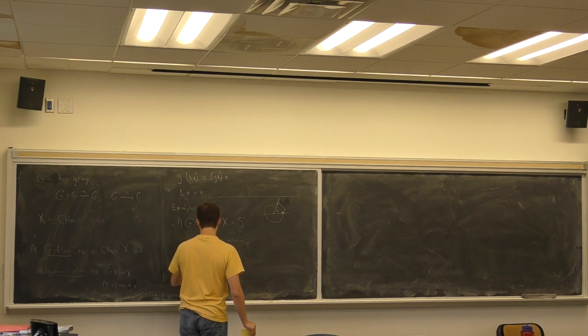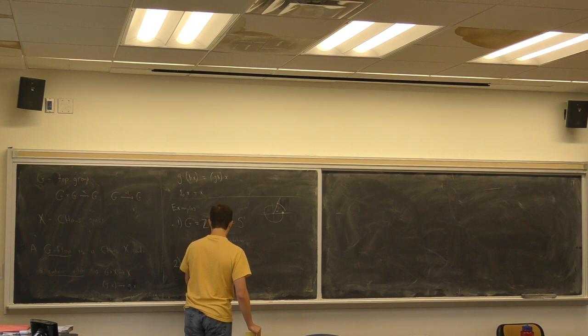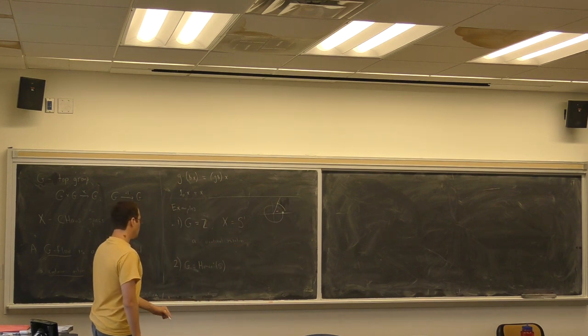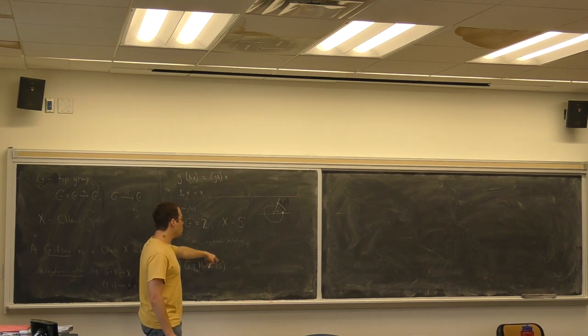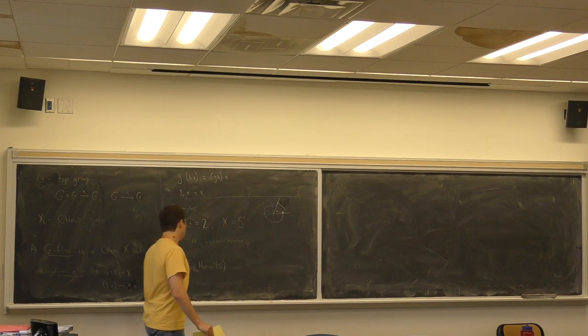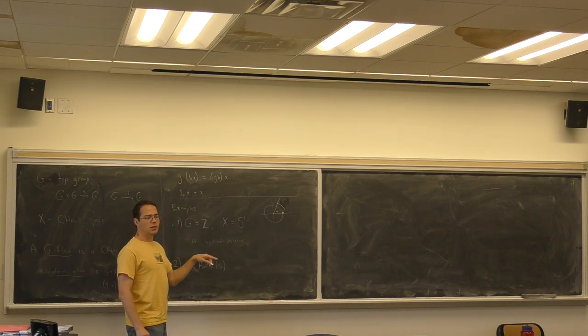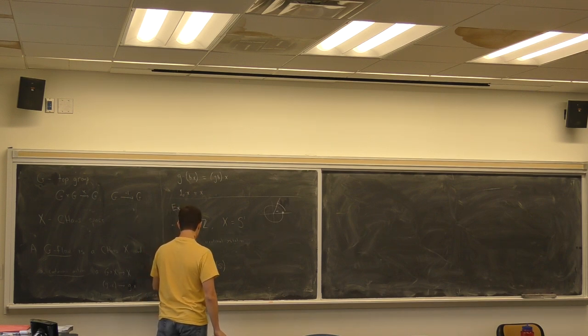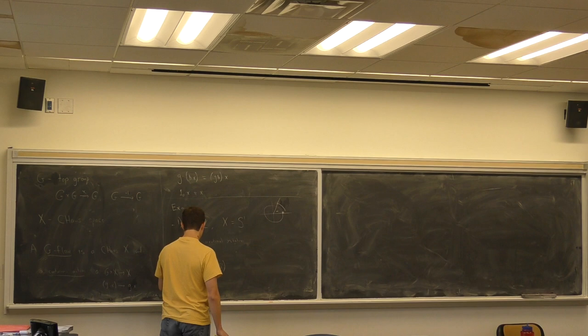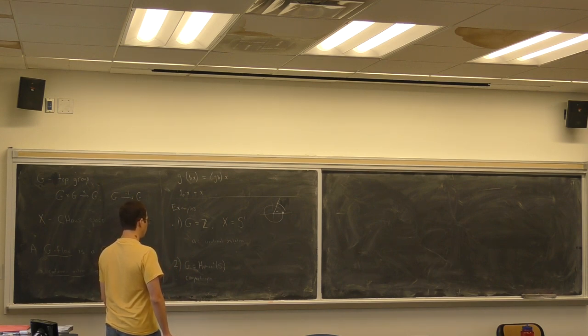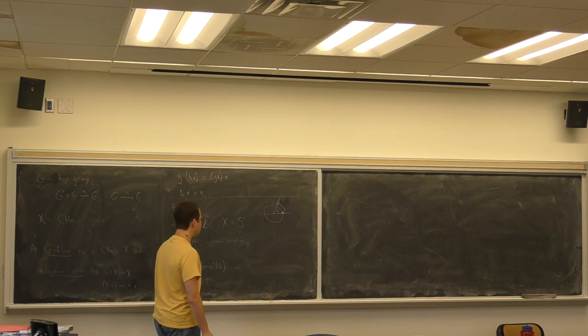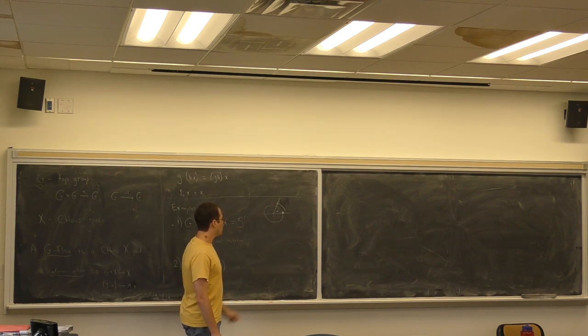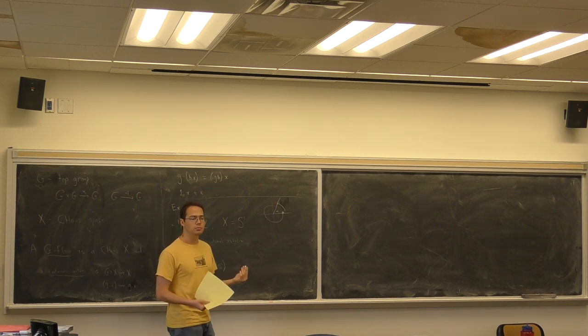G is going to be homeo plus S1. What is the little plus here doing? So homeo S1, that's just all of the homeomorphisms of the circle. The plus means no flips. Orientation preserving homeomorphisms of S1. This is not a discrete group anymore. This is going to carry the compact open topology.